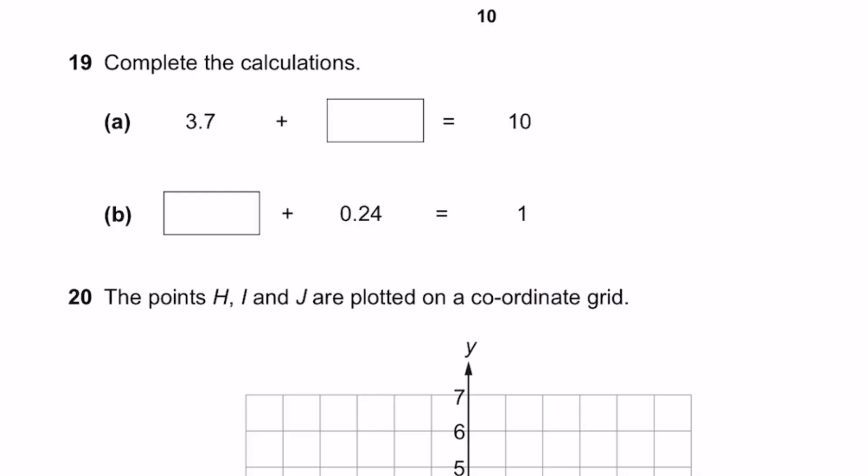Question 19. Complete the calculations. 3.7 plus dash is 10. This is simply 6.3. Dash plus 0.24 equals 1. That is 0.76.